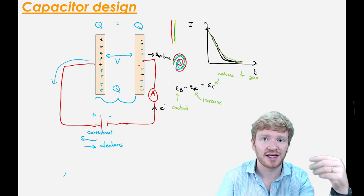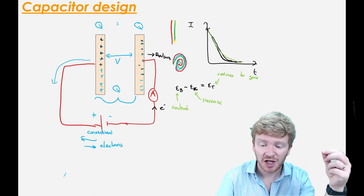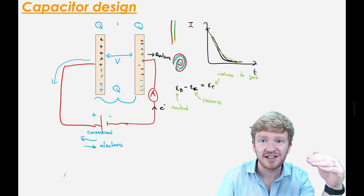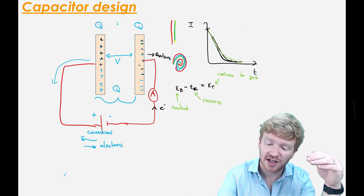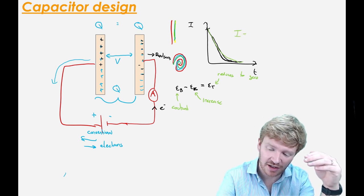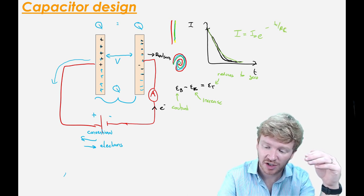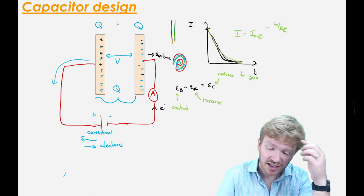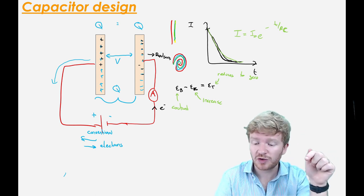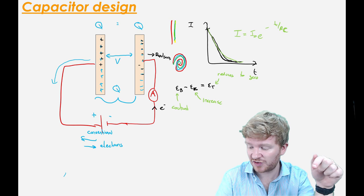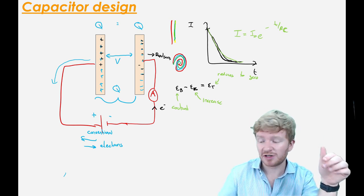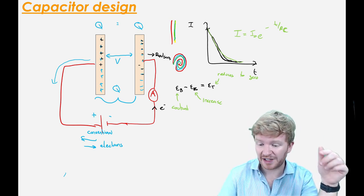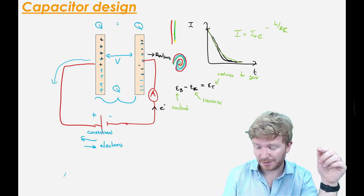I will give you some practice of that during our lessons, but just be aware that if you see something like I equals I-nought E to the negative T over RC — that's the equation for the discharge of a capacitor — don't panic. You're not supposed to know this for CIE, but it might appear on your exam, so we'll probably talk about it a little bit.